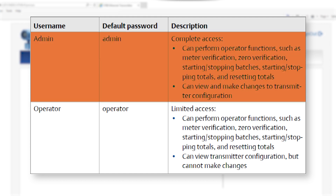Admin has complete access and can perform operator functions such as meter verification, zero verification, starting and stopping batches, starting and stopping totals, and resetting totals. Admin can also view and make changes to transmitter configuration.